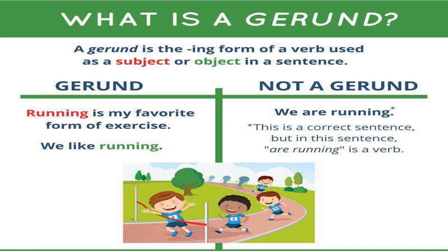Let us understand what a gerund is by comparison. A gerund is the ing form of a verb used as a subject or object in a sentence, and it becomes a noun. For example, 'Running is my favorite form of exercise' — here running acts as a noun. 'We like running' — running is a noun here. But if we say 'We are running', then we are doing some activity; this running becomes an activity and is not a noun. Hence it is not a gerund.